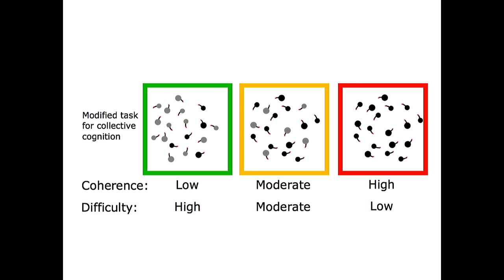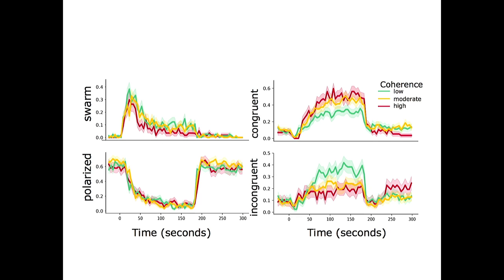So now the task is quite simple. We just present different stimuli with different coherences to fish schools. And for now, I'll just show you three levels of coherence: low, moderate, and high. These represent three difficulties: high, moderate, and low. Here's what the data typically look like. And you can't see. There is a gray bar here representing what the stimulus is. It starts at about here, and it ends about here.